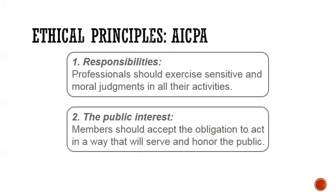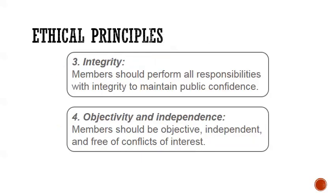The ethical principles — these broad, conceptual or philosophical principles that the AICPA has — give you an idea of what's expected and how you should conduct yourself as a professional accountant. First, professionals should exercise sensitive and moral judgment in all of their activities. Second, you have the public interest in mind — you should accept the obligation to act in a way to serve and honor the public, always thinking about those using the financial statements. Third is integrity: members should perform all responsibilities with integrity to maintain public confidence. If you don't, the whole profession falls apart.